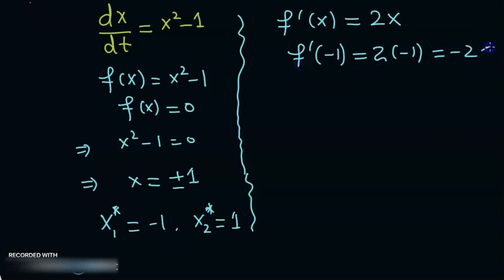Now we will see this equilibrium solution minus one. When you put this you get minus two. Now this is negative, so this shows that x star sub one is sink, in other words it's stable.